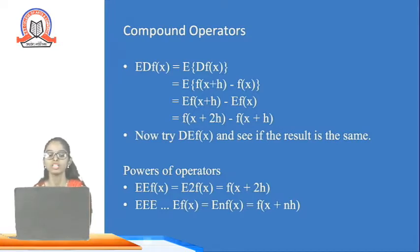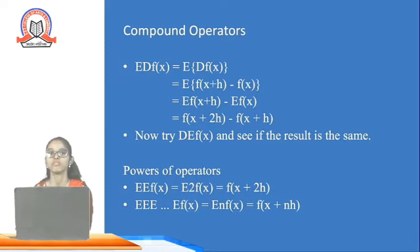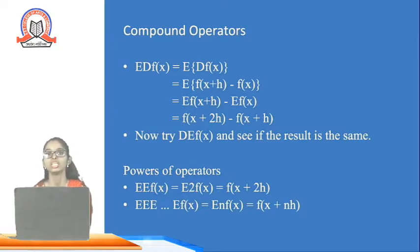Powers of the operator: E multiplied by E f(x) equals E² f(x), which equals f(x + 2h). Similarly, applying E n times gives E^n f(x) = f(x + nh).